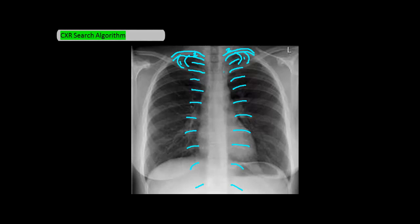What you're looking for by examining all these bones is any fractures, displacement, or abnormalities. You also want to take a look at the spine to see if anything appears abnormal. The spine should be relatively straight, you should be able to see the different discs, and the spinous process should be at the midline.